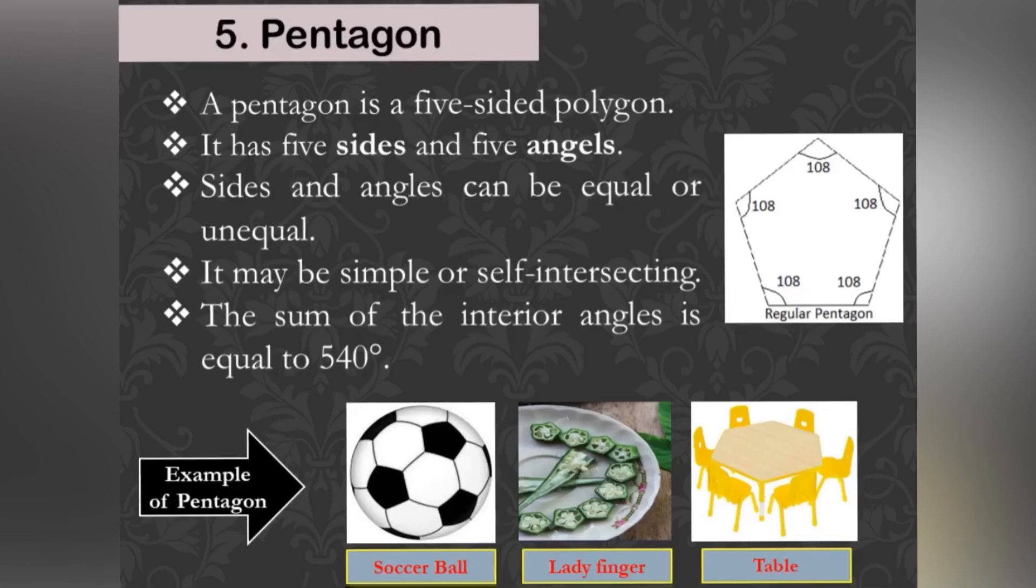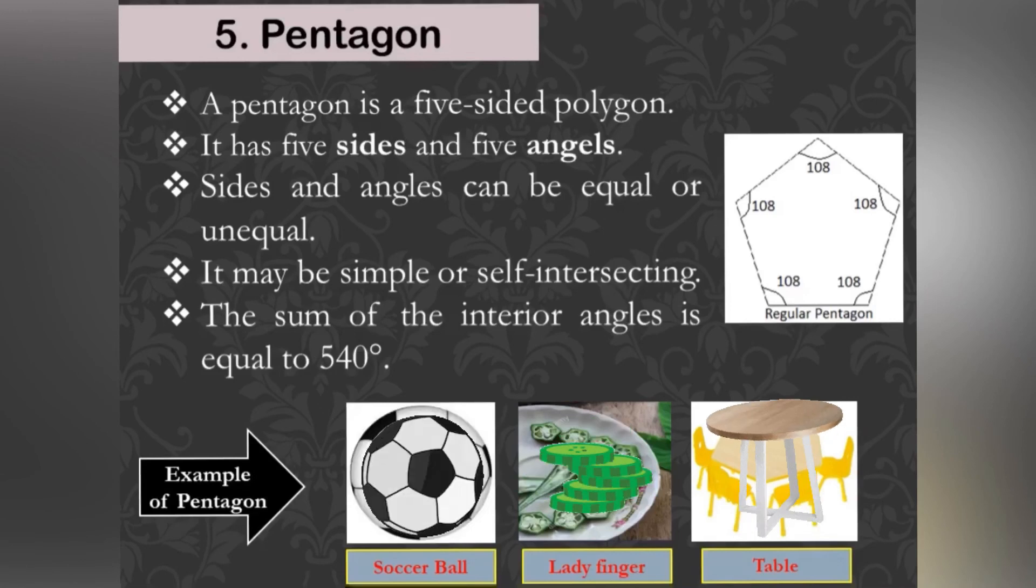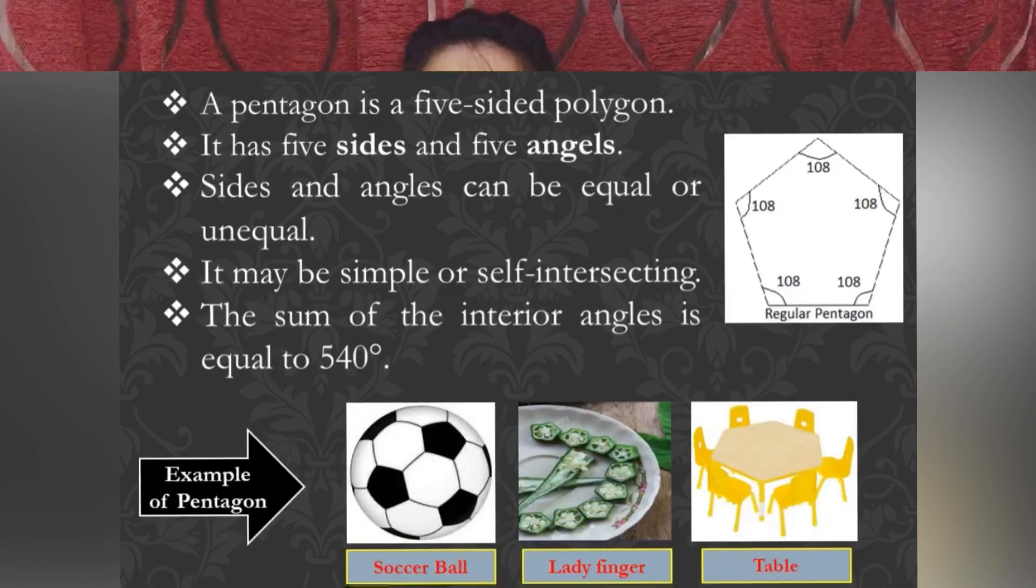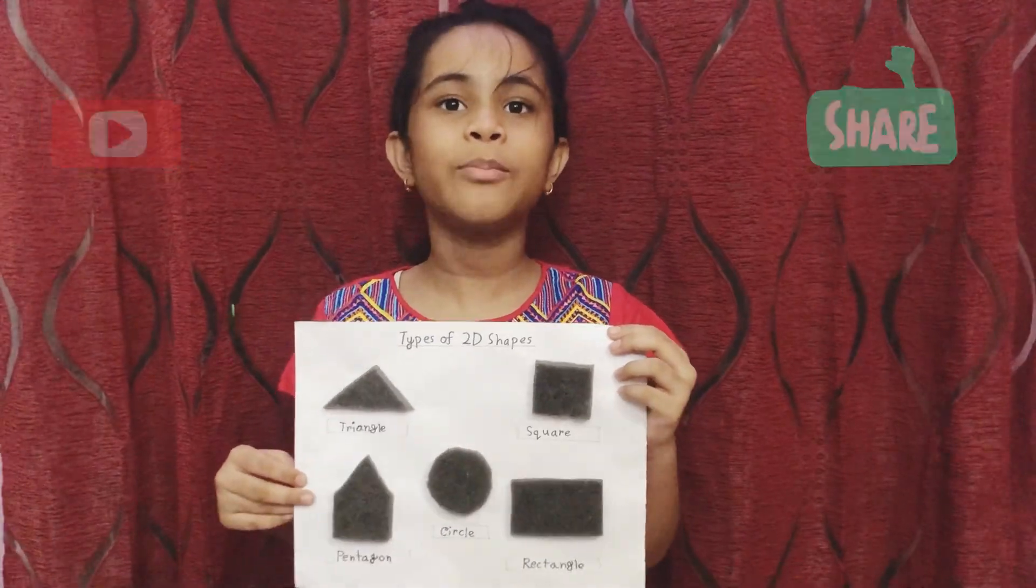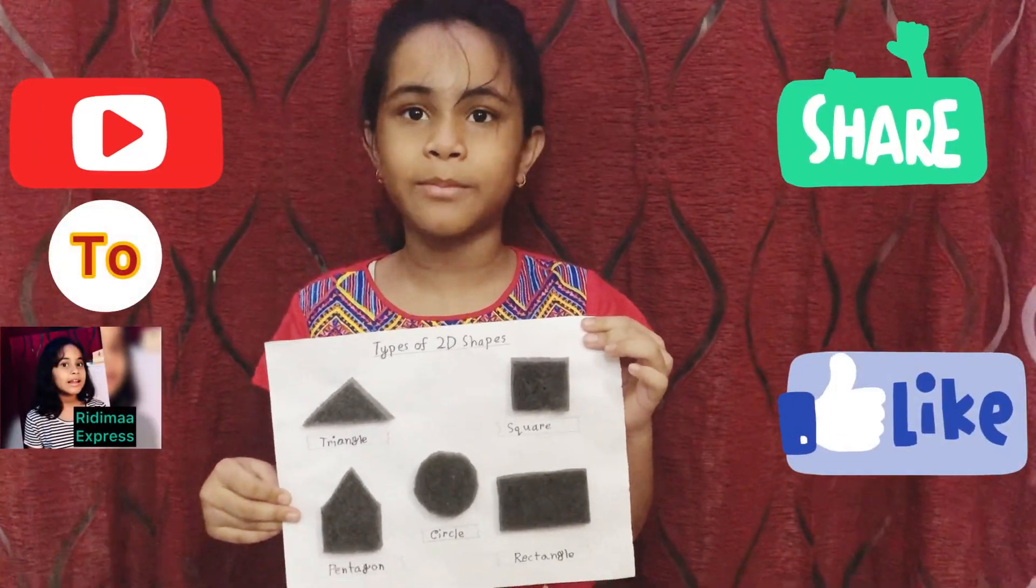Examples of pentagon are soccer ball, ladyfinger and table. I hope this video will help you to learn about 2D shape. Bye!